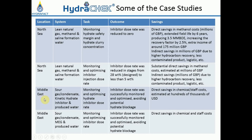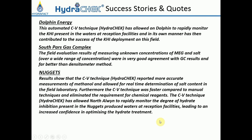Case three: Middle East sour gas condensate where a kinetic hydrate inhibitor was being used. The objective was monitoring and optimizing hydrate inhibitor dose rate. The dose rate was successfully monitored and optimized, avoiding potential hydrate blockage, with direct savings in chemical and lab costs amounting to thousands of US dollars. Case four: Middle East sour gas condensate with make-up and produced water. Inhibitor dose rate was successfully monitored and optimized to avoid potential hydrate problems, with direct savings in chemical and staff costs.